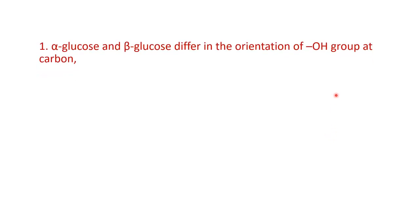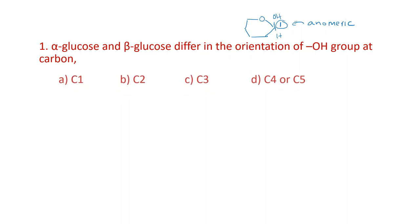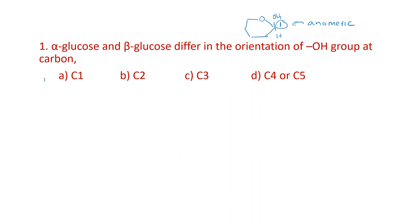Now to the questions. The first question: alpha and beta glucose differ in orientation of the OH group at which carbon? The aldehyde carbon (carbon 1) became the new chiral center — the anomeric carbon — where the OH can be either on top (beta) or at the bottom (alpha). Alpha D glucose and beta D glucose have different specific rotations, different melting points, and are classified as diastereomers. The answer is carbon 1 (C1).